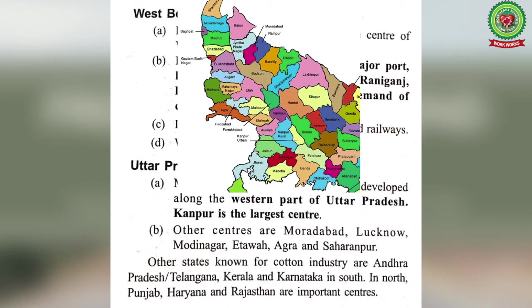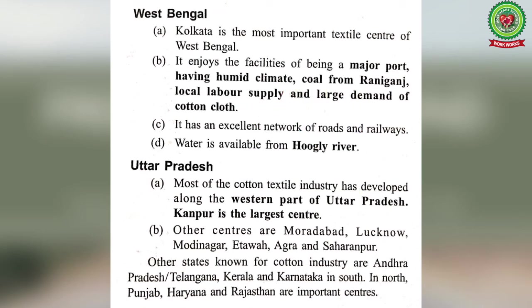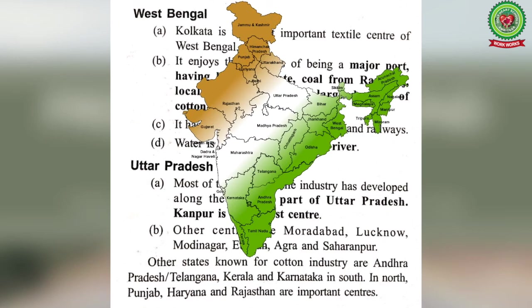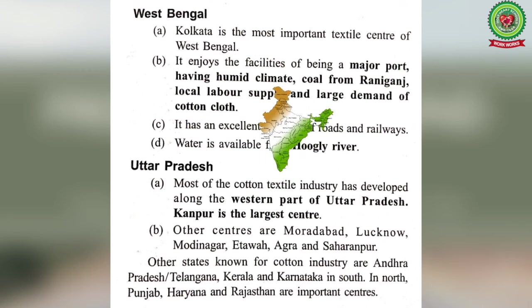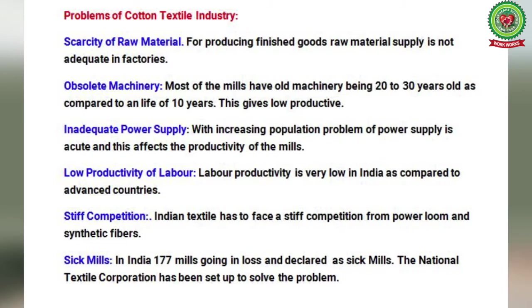Other centers in Uttar Pradesh are Muradabad, Lucknow, Modinagar, Etawah, Agra, and Saharanpur. Other states known for cotton industry are Andhra Pradesh, Telangana, Kerala, and Karnataka in the south, and Punjab, Haryana, and Rajasthan in the north.